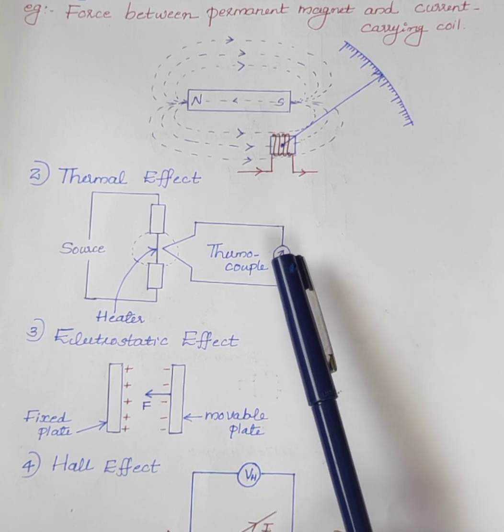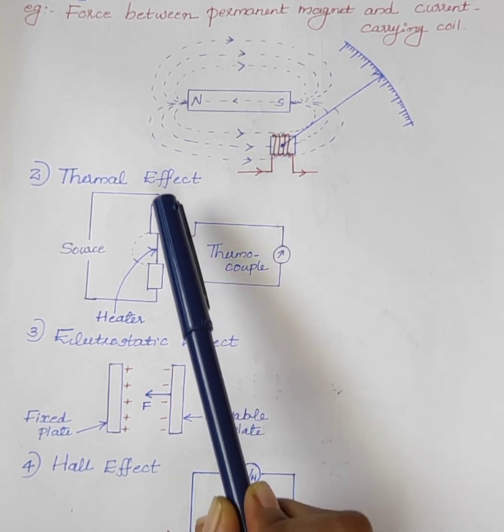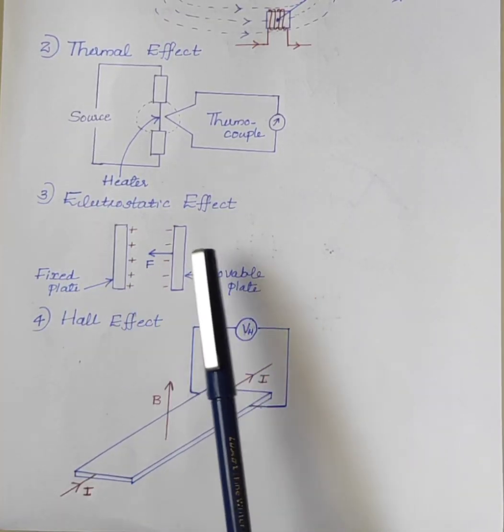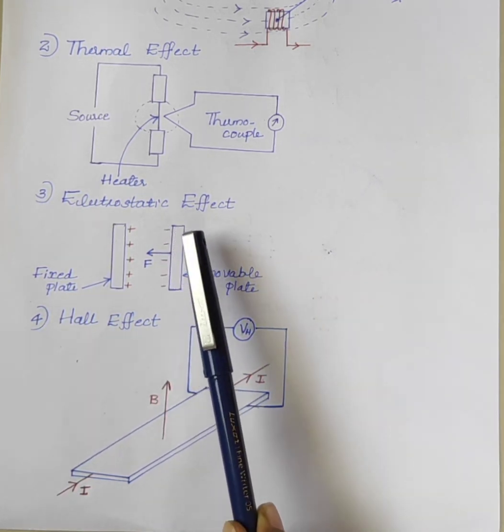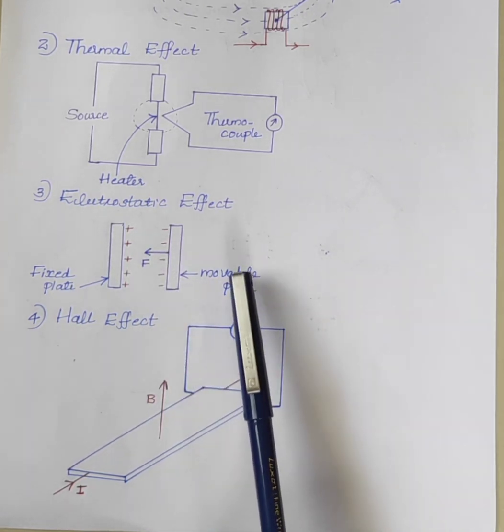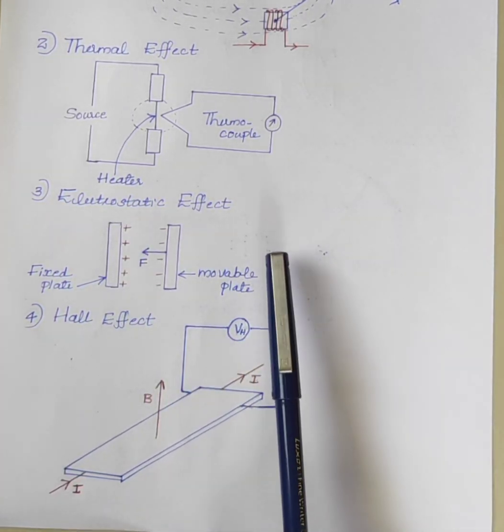The meter indicates the RMS value of the current flowing through the heater element. The next one is the electrostatic effect. The instrument which uses static electric field for producing the deflecting torque is known as an electrostatic instrument.